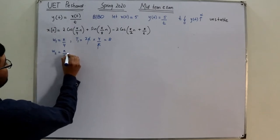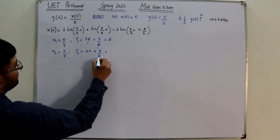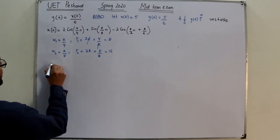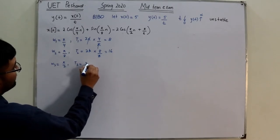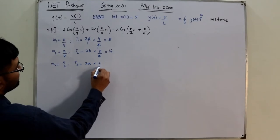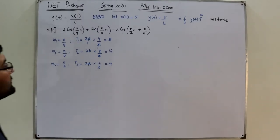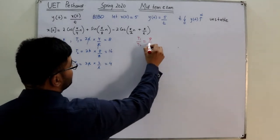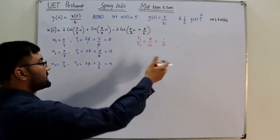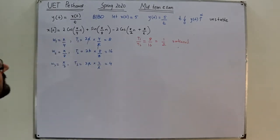Omega-3 is π/2, so T3 = 2π·(2/π) = 4. Now we take the ratios. T1/T2 = 8/16 = 1/2, which is a rational number, so the periodicity condition is satisfied for signals 1 and 2.